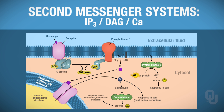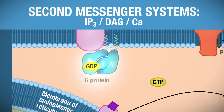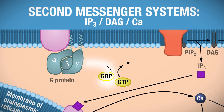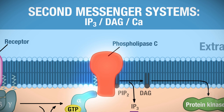Once again, we're going to begin with the ligand that binds to the receptor. Once the ligand binds to the receptor, that will activate your G-protein. GDP falls off the alpha subunit, GTP binds to the alpha subunit, and that activates the amplifier enzyme called phospholipase C.